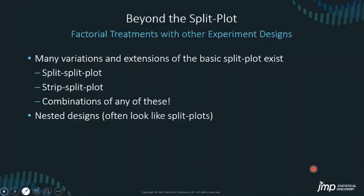Beyond the split plot: we can have factorial treatments with other experiment designs — split-split plot, strip-split plot, and all sorts of combinations. We could also have a nested design where we only observe factor B at particular levels of factor A, which often looks like a split plot and is analyzed similarly. Working through the skeleton ANOVA process helps you identify the correct error term for each treatment effect when you have complicated designs like strip-split plot or split-split plot.